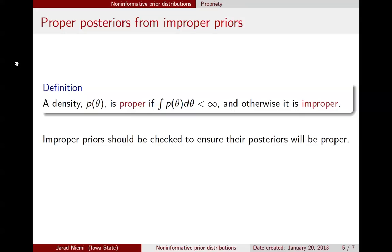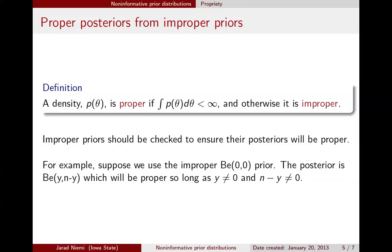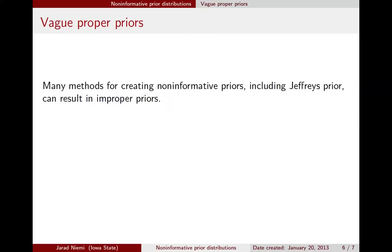Okay, so what I was trying to get to is that if you have an improper prior, you should always check to ensure that the posterior is proper. In particular, in the example we've been using of the improper beta 0, 0 prior, the posterior, we already know from previous work, the posterior is a beta y, n minus y, and this is only going to be proper if y is not 0 and n minus y is not 0. That is, y is not equal to n. If either of those two situations occur in your particular data set, then this posterior will be improper.